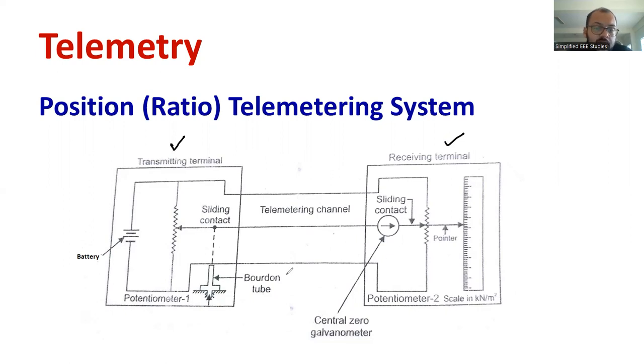In the transmitting terminal, we can see there is a potentiometer one. And we have the DC power supply. We provide battery. Now we can see the sliding contact and the resistor. This is directly connected with the bourdon tube.